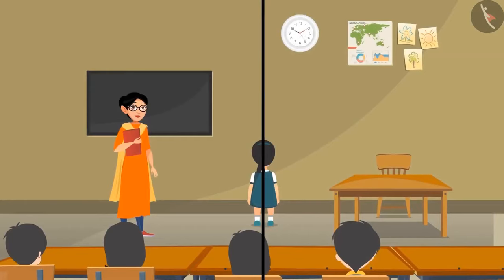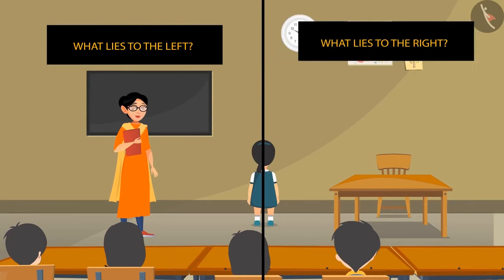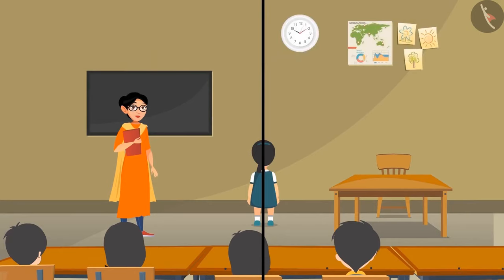Now let's enter this class. Identify what lies to the left of the girl and what lies to her right. On the left are the blackboard and the teacher. On the right are the chair and the table.